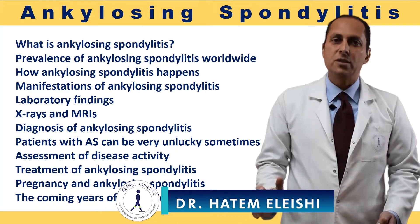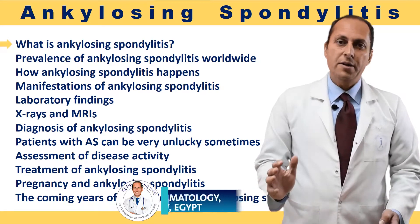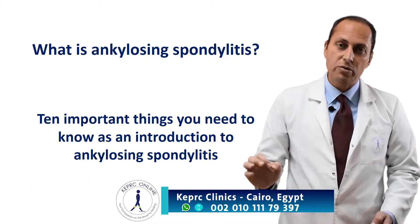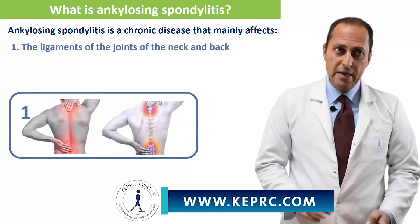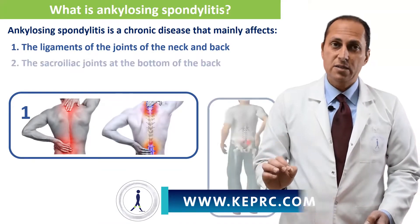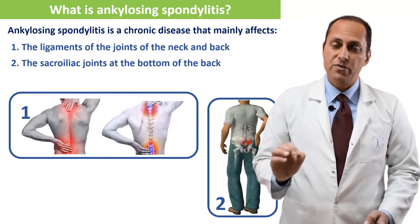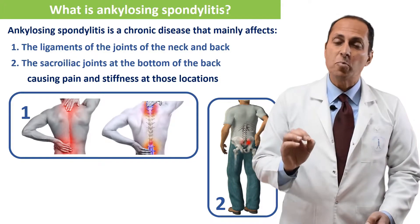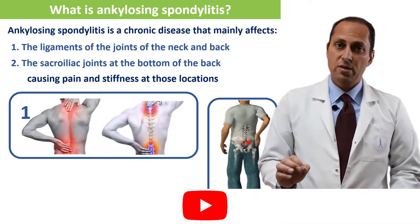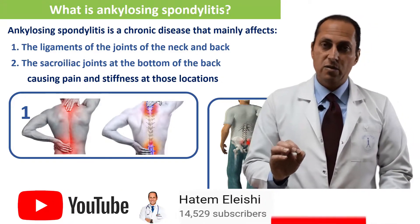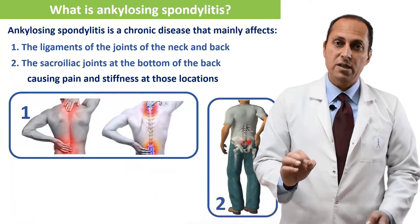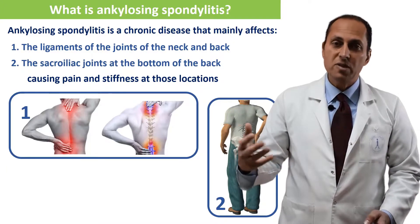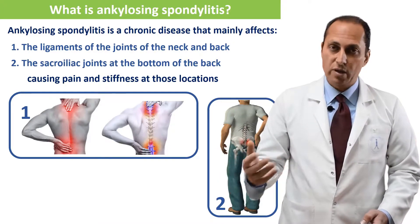Now we start with the first lecture of this series. What is ankylosing spondylitis? Another very suitable title for this lecture is the 10 most important things you need to know as an introduction to ankylosing spondylitis. Ankylosing spondylitis is a chronic disease that mainly affects the ligaments of the joints of the neck and back and the sacroiliac joints at the bottom of the back, causing pain and stiffness at those locations.